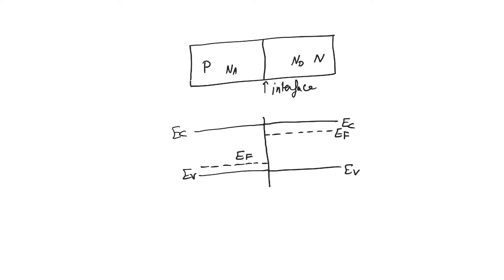When we look at this band diagram, this is not a band diagram for a junction at thermal equilibrium — it is at non-thermal equilibrium. How do I know that? Because the Fermi level is not constant throughout the device. We see two Fermi levels: one on the p-side and one on the n-side, and between them there is an abrupt jump in the Fermi level. This cannot be a device at thermal equilibrium.